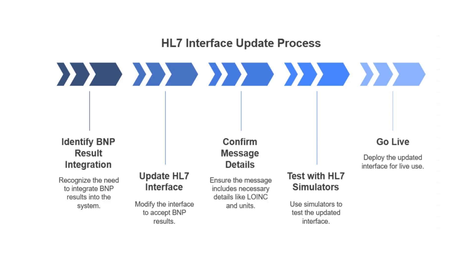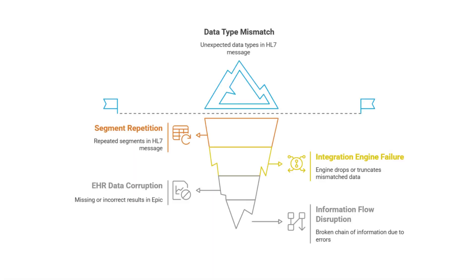One of the trickiest errors often comes down to segment repetition or unexpected data types within a specific segment. For instance, an HL7 message might be expecting a numeric result, but if the lab system accidentally sends a text string like 'TNP' for 'test not performed,' the integration engine might either just drop the whole message or truncate the data, leading to either a missing or incorrect result showing up in Epic. It seems like a small detail, but it can completely break that chain of information.